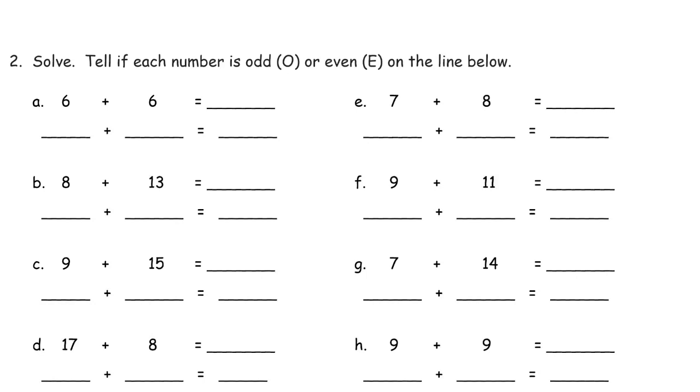And I'll just leave that one off the end there, and that makes it odd. And now tell if each number is odd or even on the line below. So let's see. Six plus six is 12. And I'm going to write O or E under each number. So six is an even number, even, even, even. So that tells me that two even numbers added together make another even number. So here we have an odd number and an even number. Seven plus eight is 15. And 15 is odd. So odd plus even is odd. Eight plus 13 is 21, which is odd. Eight is even. 13 is odd. So odd plus even is odd. Even plus odd is odd.